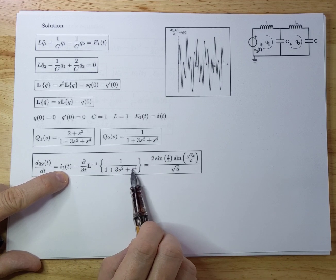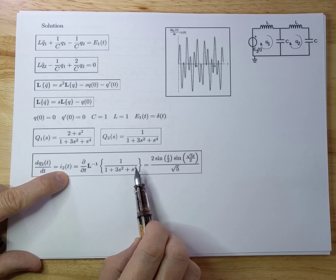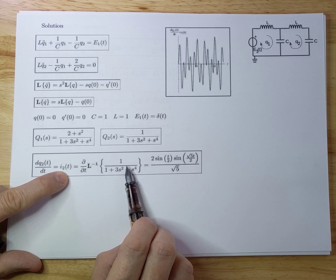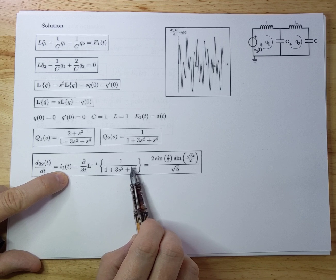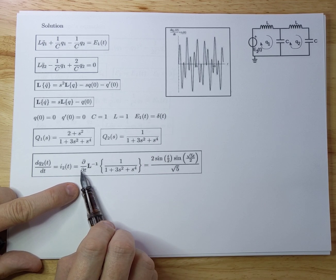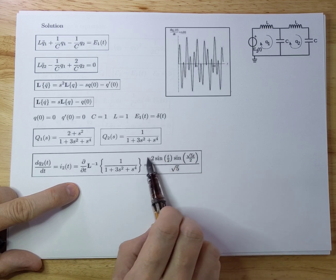You do an inverse Laplace transform on that, which I'm not going to do here. But I used Mathematica to actually calculate this. You can also do it by hand. It's tedious, but doable. And then I differentiated that towards the time. And if you do that, you get this function out of it.